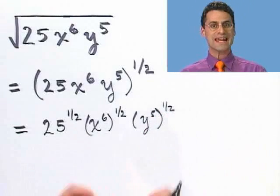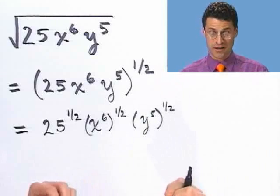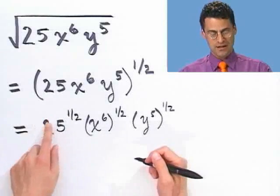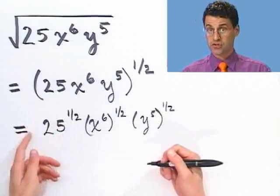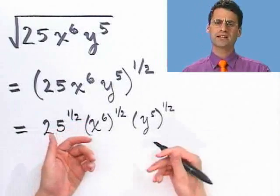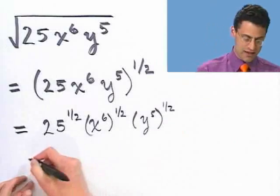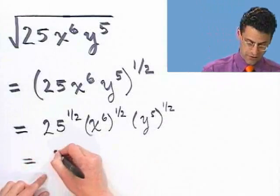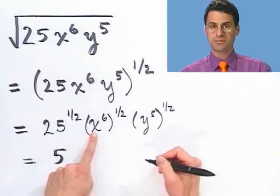It's always the same idea — divide and conquer as much as possible. Now, 25 to the one-half is the same as the square root of 25. Hopefully we'll get comfortable enough to just know that equals 5.